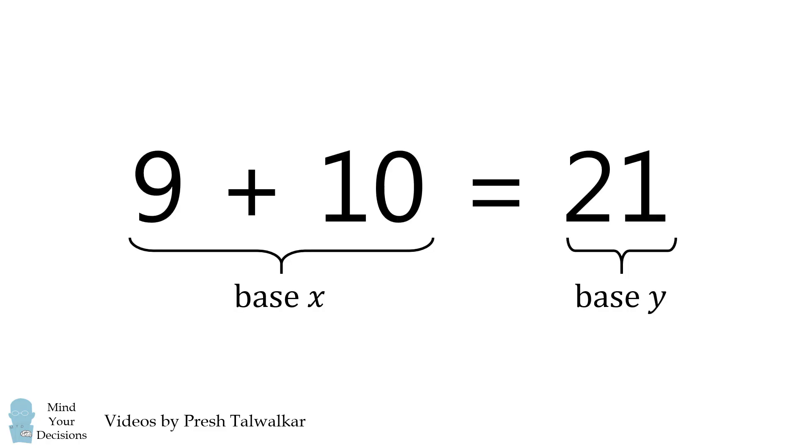So now let's solve our problem. Each of the numbers on the left is in base x. 9 in base x will be equal to 9. We now convert 1, 0 in base x. This expands to be 1x or just x.